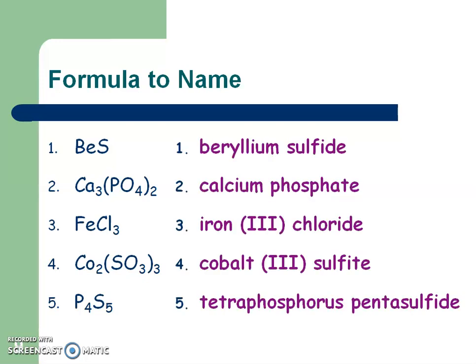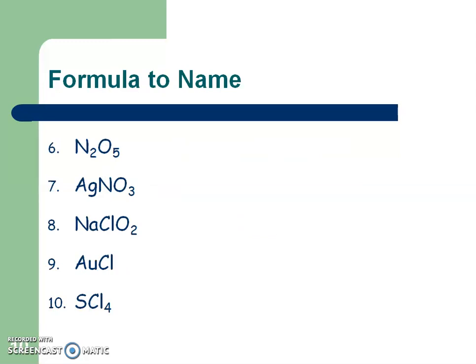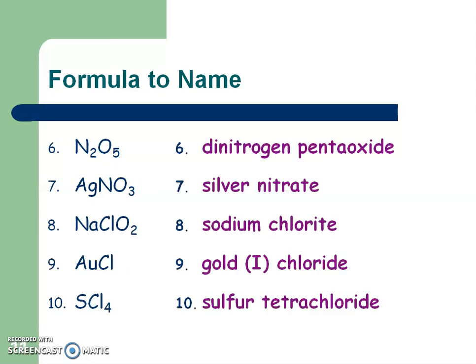You should have paused and checked your answers. If they're all correct, you're on the right track. If not, make notations about what you're getting wrong. Try the next five — and here are your answers. Pause and make sure they look exactly as shown. You need to have your -ide endings correct, your Roman numerals correct, and your prefixes correct. Everything has to be precise because this is right or wrong.